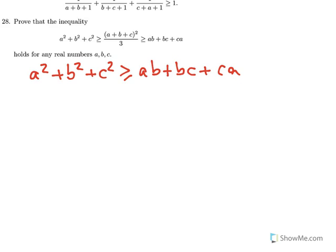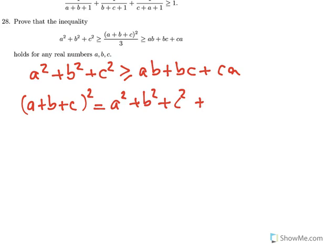We know that a plus b plus c perfect square is equal to a squared plus b squared plus c squared plus twice ab plus bc plus ca.